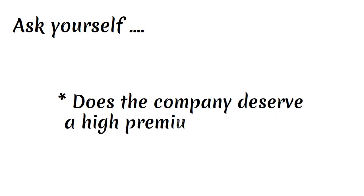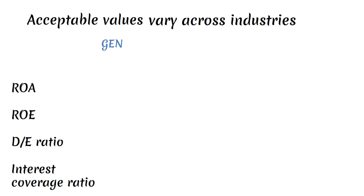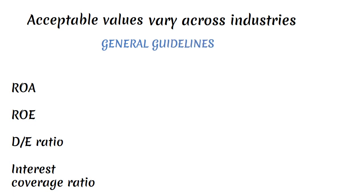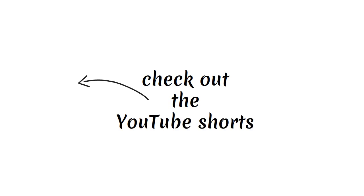Does the company deserve a high premium valuation? Acceptable values for ROA, ROE, debt-to-equity ratio, and interest coverage ratio may vary across industries. However, as a general rule, the following guidelines can be followed: An ROA greater than 5% is considered favorable, while an ROA exceeding 20% is regarded as excellent. An ROA less than 5% is considered undesirable. An ROE greater than 15% is deemed good. A debt-to-equity ratio below 2 is considered favorable, whereas a ratio above 2 is a red flag. An interest coverage ratio greater than 4 is acceptable, but less than 2 is undesirable.